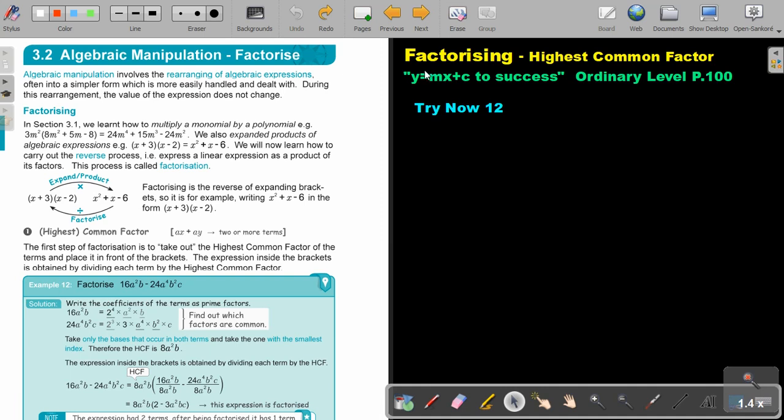In this video, we are going to look at factorizing and we're going to focus on the highest common factor. You will find this on page 100 in the Namibia Ordinary Level Mathematics textbook Y equals MX plus C to success. But let's first look at the introduction.